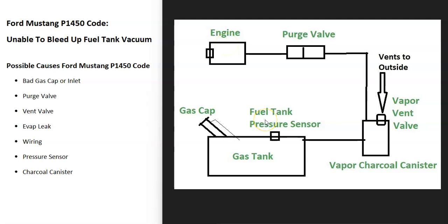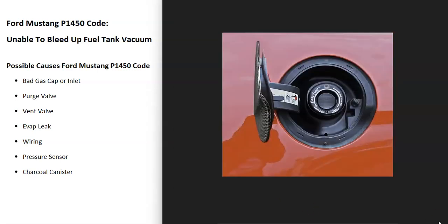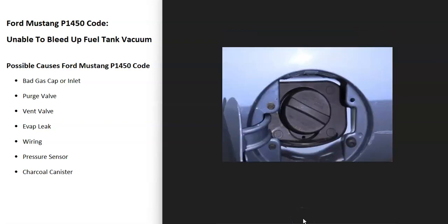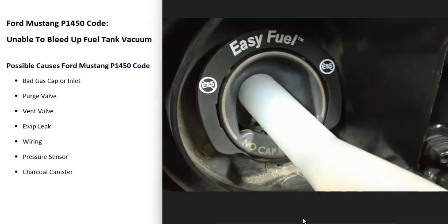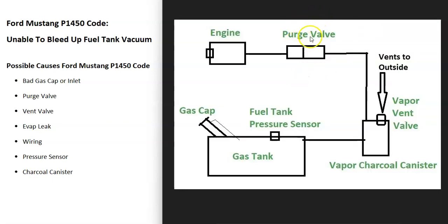Possible causes start with the gas cap or inlet, which is part of the EVAP system. If it's not sealing right, it will cause issues. This includes Mustangs with the Easy Fuel system — that inlet needs to seal, or it could cause a leak and the system won't be able to go into vacuum. So the first thing to do is check the gas cap, make sure it's not cracked or damaged. If you have the Easy Fuel system, try cleaning that inlet — there's a funnel in the trunk you can use with WD-40 to clean it up and ensure it's sealing correctly.